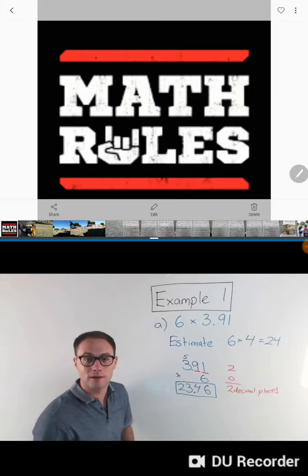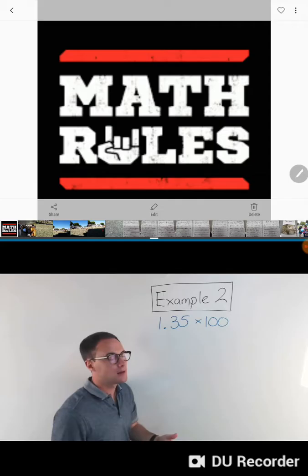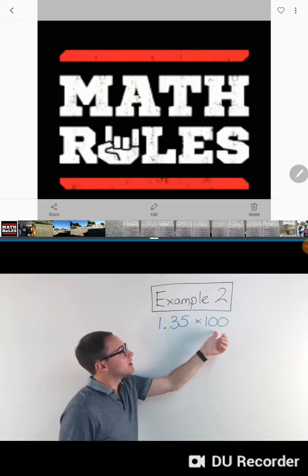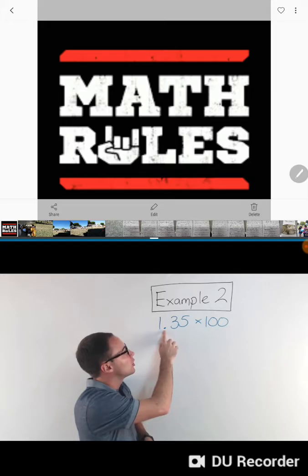Let's try another one. Here's Example Number 2: 1.35 times 100. When you're multiplying by powers of 10, like 100, it's 10 times 10, or 10 squared, there's a really nice shortcut that you can make.